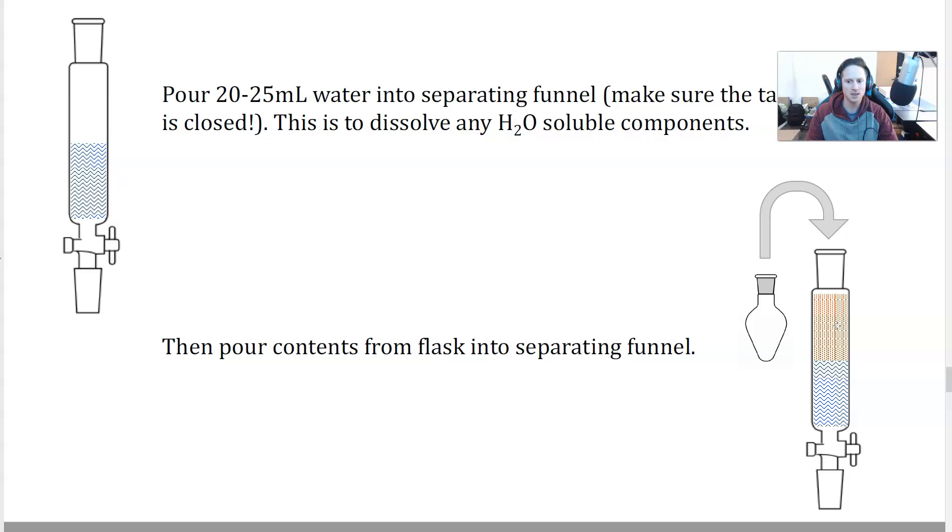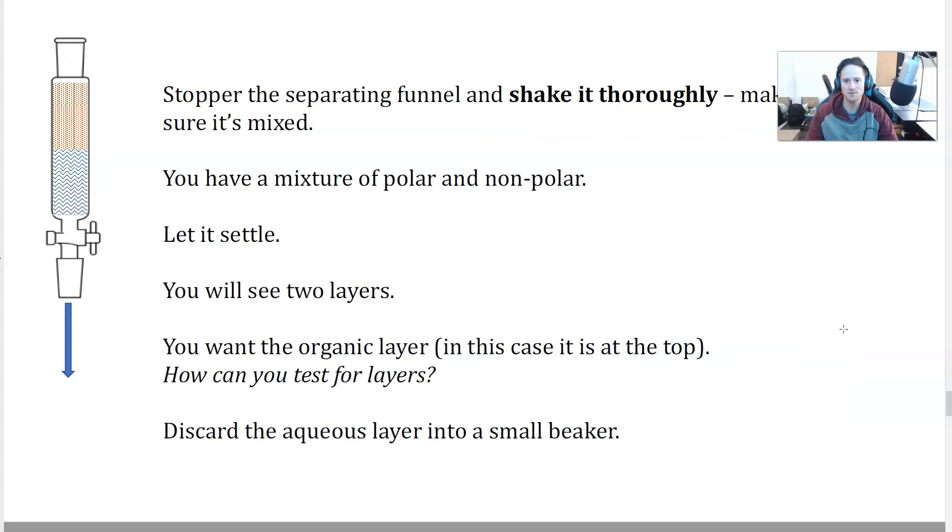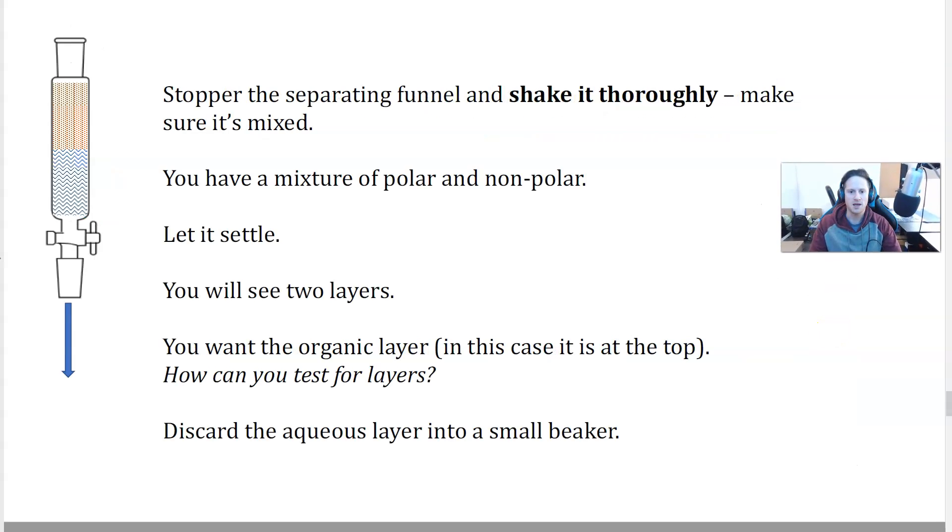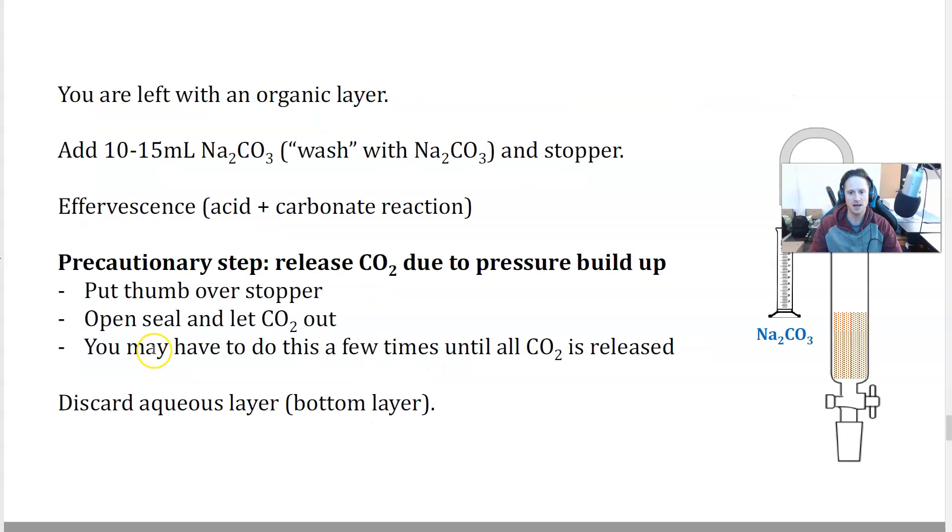So I've got a layer, organic layer. The important thing is to recognize what layer is actually important for our practical. What do we want? That's the organic layer, because it has the ester dissolved. What you do then is stopper the separating funnel and shake it to mix. Let it settle. You're going to get two layers settled out. We want the organic layer as I mentioned. You discard the aqueous layer into a small beaker. You don't want to get rid of it down the sink. You don't want to dispose of it, because just in case you make a mistake, you want to leave it there. And you also want to wash the organic layer a few times.